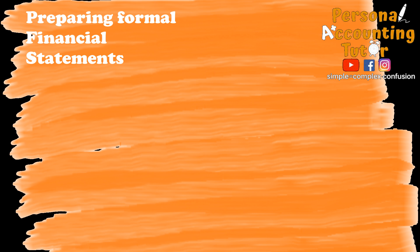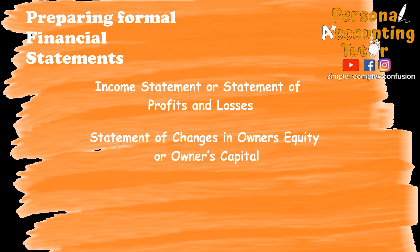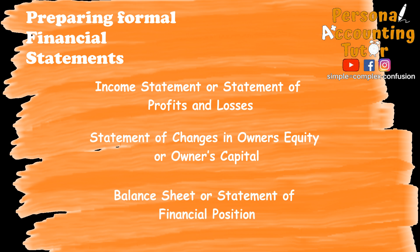Financial statements are reports summarizing what had happened over a period of conducting business. Think of it as a report card — a detailed type of report card. The correct order of preparing the basic common financial statements is: first, the income statement or statement of profits and losses; followed by the statement of owner's equity or owner's capital; then the balance sheet or statement of financial position. For simplicity, we will omit the notes to financial statements, the cash flow, and other more advanced presentations in this illustration.